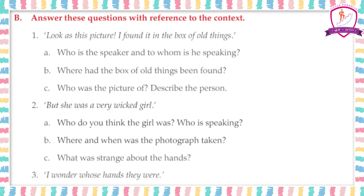Next reference to context: 'But she was a very wicked girl.' Who do you think the girl was? The girl was grandmother in her childhood. Who is the speaker here? The boy was not saying this — grandmother herself was saying that she was a wicked girl. So grandmother is the speaker.